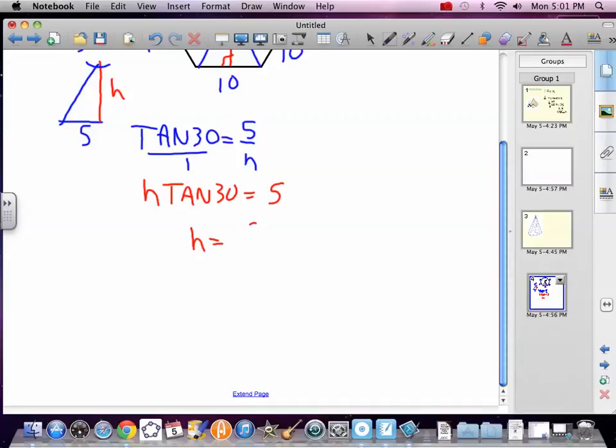Divide both sides by tan 30 to get it away from h. We got h equals 5 over tangent of 30. So h equals 5 divided by tangent 30, 5 divided by tangent 30, 8.66.